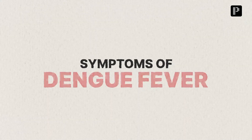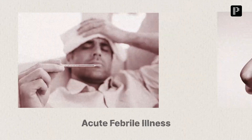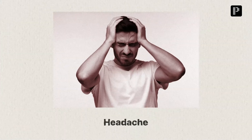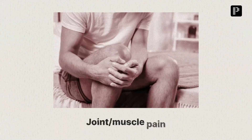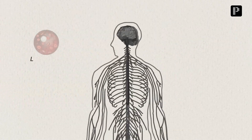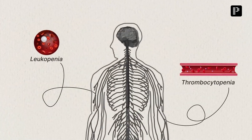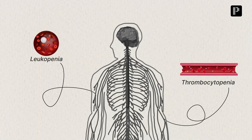First, let's look at how to suspect Dengue Fever in a patient. If the patient presents with acute febrile illness, headache, retro-orbital pain — that is pain behind the eyes — joint and muscle pain, rashes, leukopenia, and thrombocytopenia, combined with patient history, these are strong indicators of Dengue Fever.